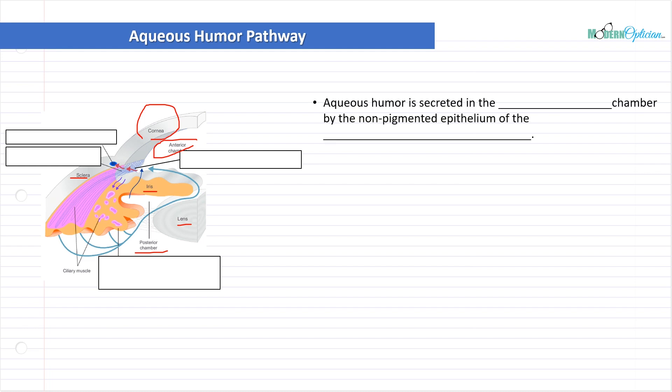Aqueous humor is secreted in the posterior chamber, in front of the lens, behind the iris by the non-pigmented epithelium of the ciliary processes. That's where aqueous humor starts. Those ciliary processes are constantly producing this aqueous humor. It never stops, it's always going on.